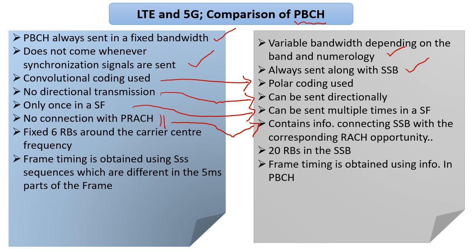In LTE, PBCH was always tied to the center frequency position, but here, since it comes with SSBs, there is no such fixed tying. The number of RBs is also different — 20 RBs instead of 6 RBs. And frame timing, which in LTE was obtained using secondary sync signals, is not the case here; frame timing is obtained from information given in the PBCH.